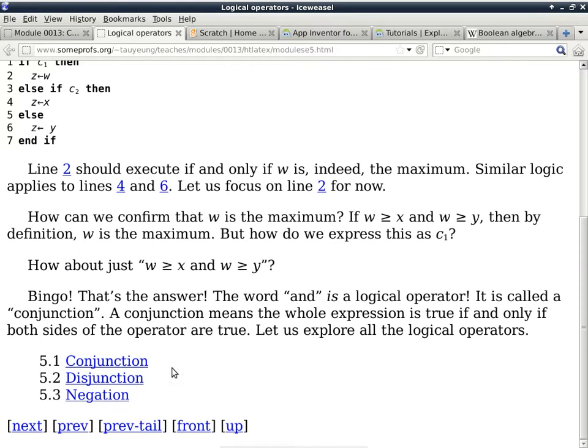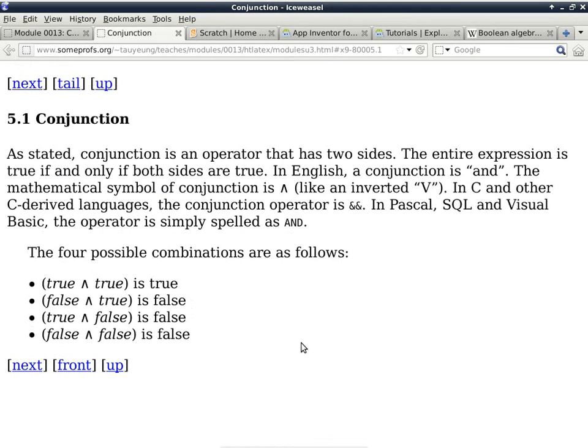It looks like we have a pretty good understanding of logical operators already, so we're just going to make this more formal at this point. Conjunction is nothing more than the English word 'and'. The mathematical symbol, which sometimes I use in this class, looks like a teepee, like a little inverted V symbol.